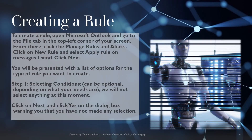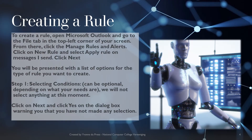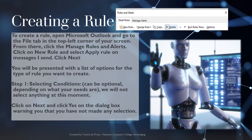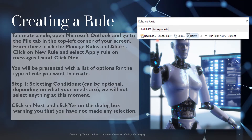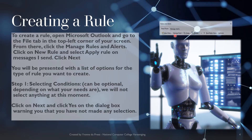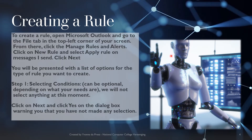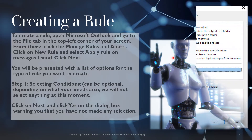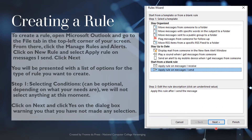Click on the File tab in the top left corner of your screen. From there, click on Manage Rules and Alerts. Click on New Rule and select Apply rule on the message I sent, and then click Next.